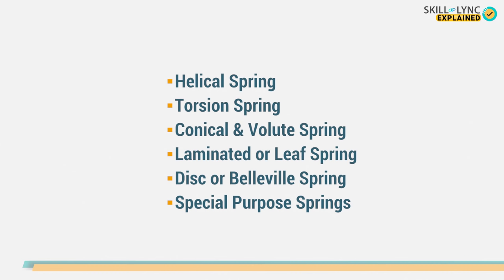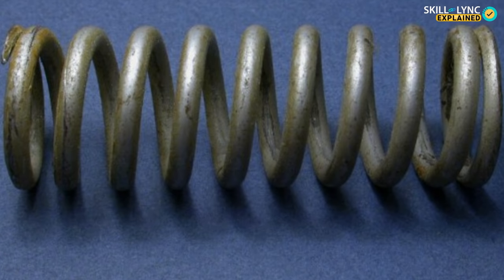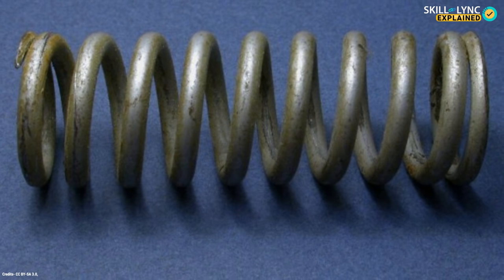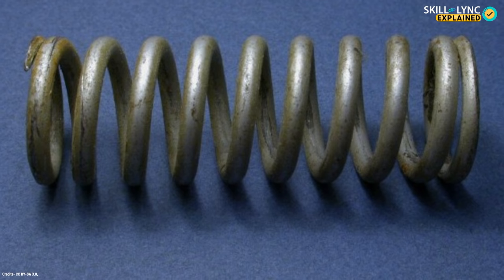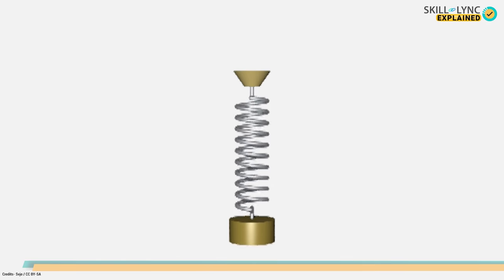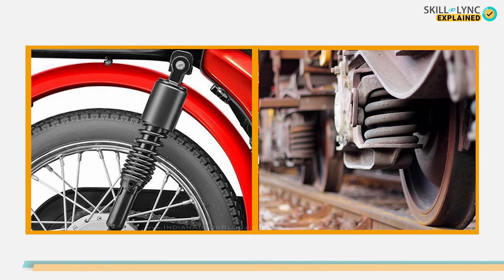Let's start with helical springs. Helical springs are the most commonly used springs. As the name suggests, these springs are in the shape of a helix. This type of spring can store energy when it is compressed and releases the energy when the compressive force is released. It can also withstand forces when it is pulled. These types of springs are commonly seen in the suspensions of automobiles.